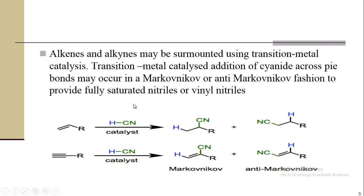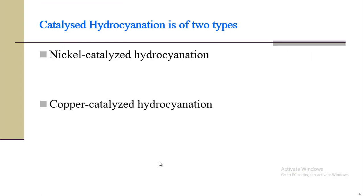So we will get saturated vinyl nitrile or simple nitrile by using HCN in the presence of catalyst. Hydrocyanation is mostly done by using nickel-catalyzed and copper-catalyzed hydrocyanation.